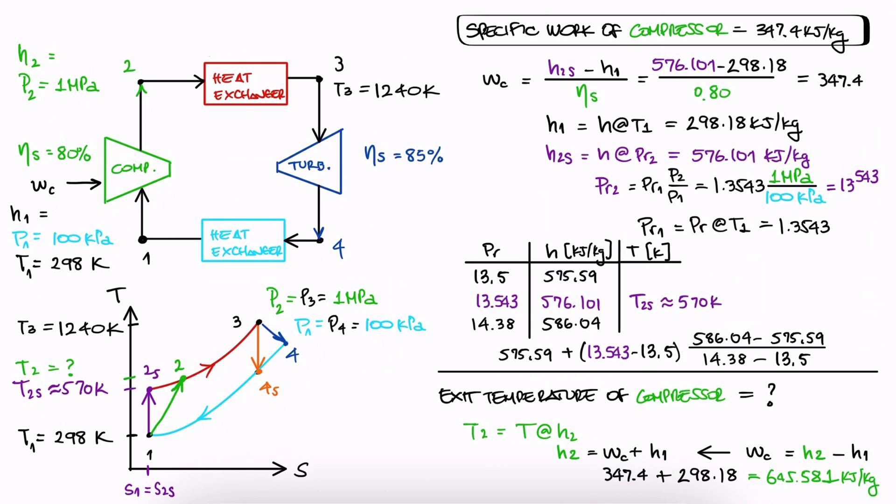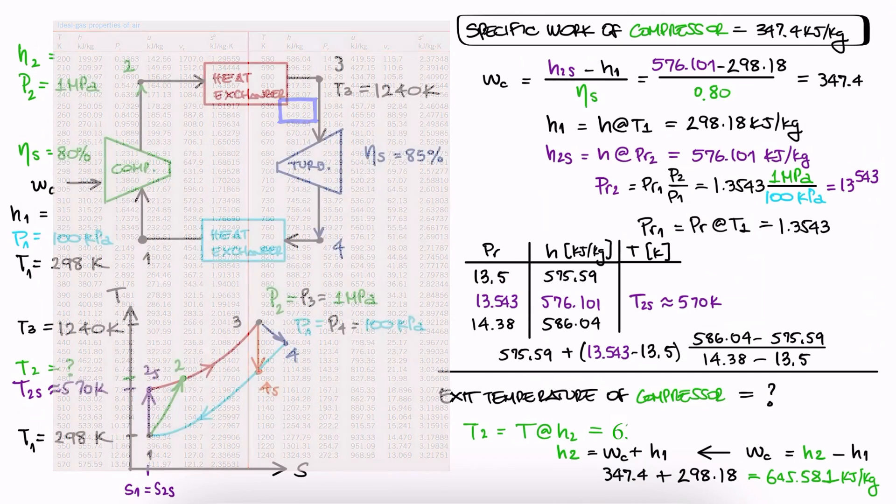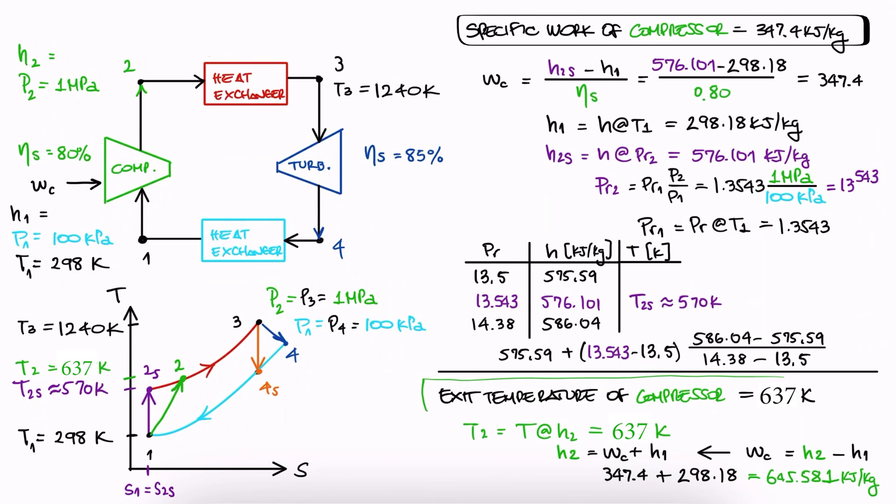With this value for H2, we can look it up in the table and use the closest H values there to interpolate and find the corresponding temperature T2. If you want to check out other examples in the ideal and non-ideal Brayton cycles topic, make sure to check out the links I left down in the description below. You'll also find the links to the other lectures of the Thermo course as well as other engineering courses.